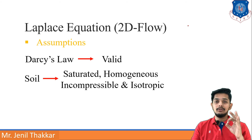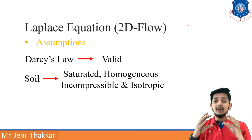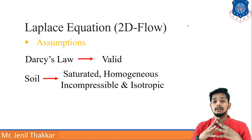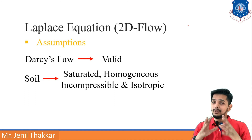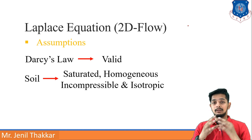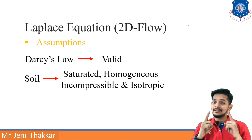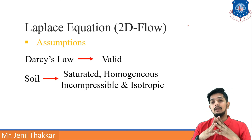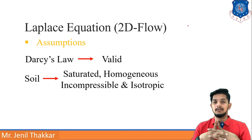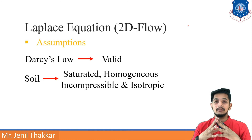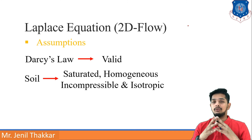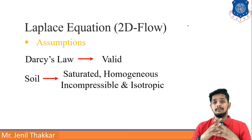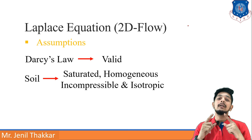Homogeneous means soil is made up of the same type of soil particles — if it is sand, every particle should be sand. Incompressible means it is assumed as not compressible, even though we know everything is compressible to some extent. Isotropic simply means it has the same elastic properties in every direction.